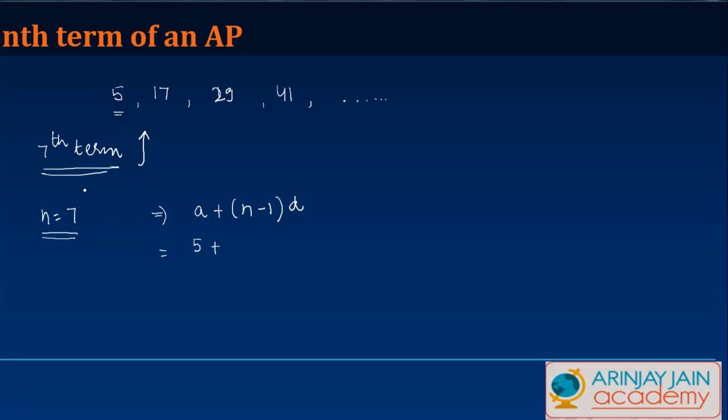Which is the term which we want to find out? We want to find out the seventh term. So 7 minus 1 times D. So what is D?